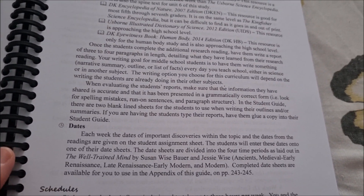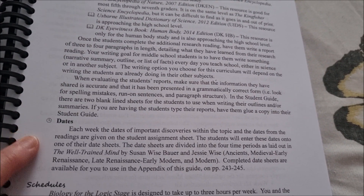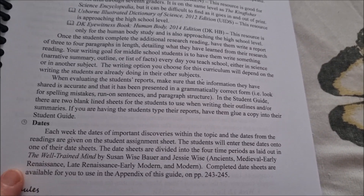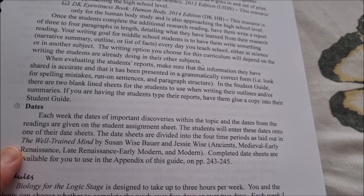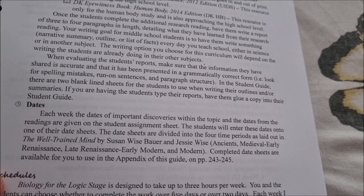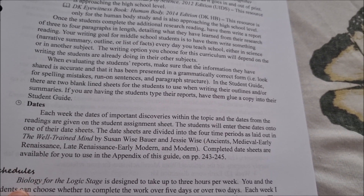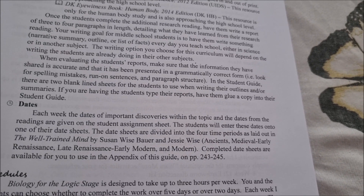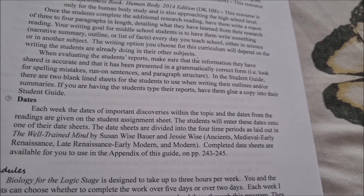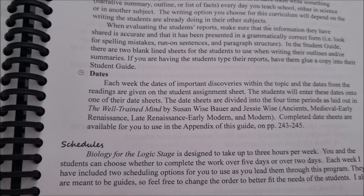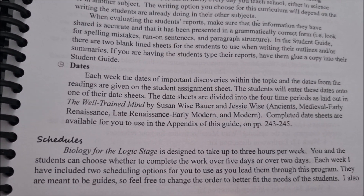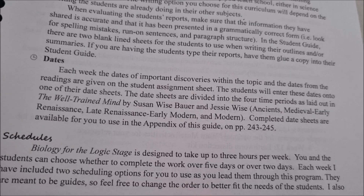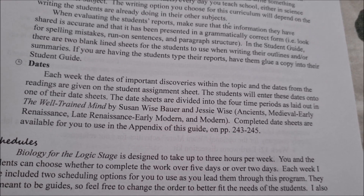In terms of the classical method, this does include dates for important discoveries that you can memorise, if you're following something along the lines of The Well-Trained Mind. She says the schedule is up to three hours per week and you can do it over five or two days.